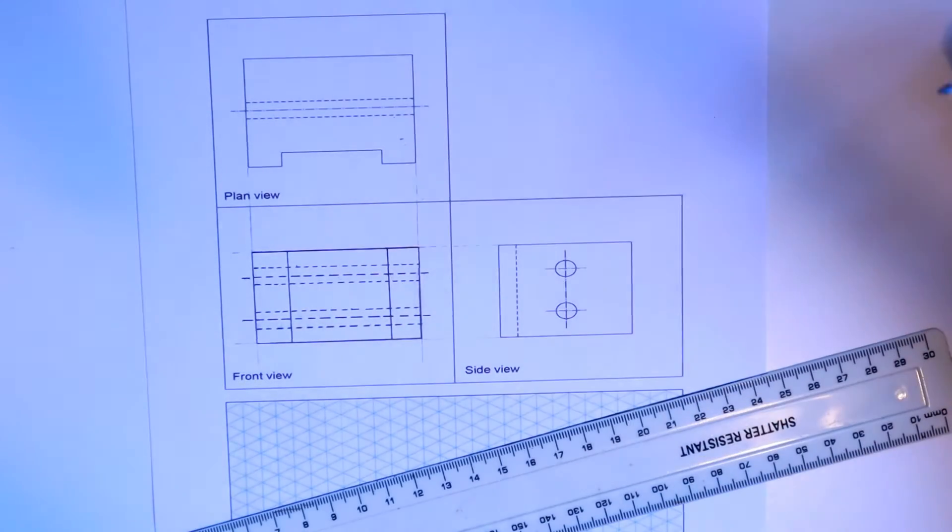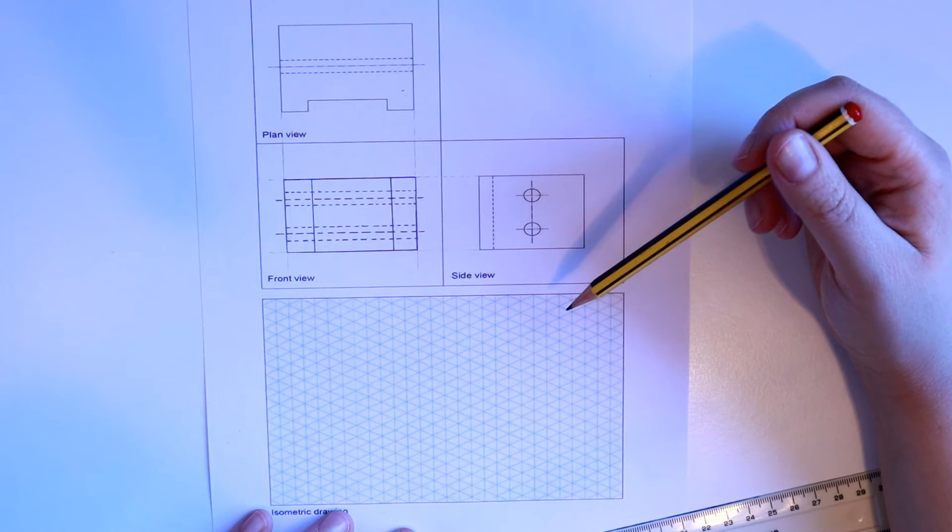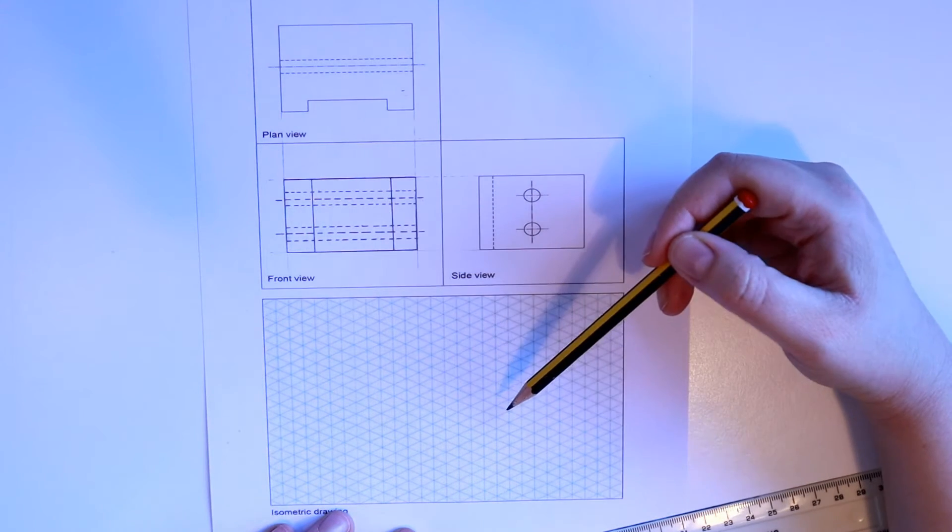And that is done. The second part of the question requires you to draw an isometric drawing of the shape. So you've got an isometric grid here.